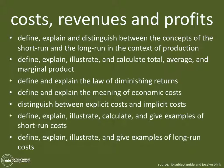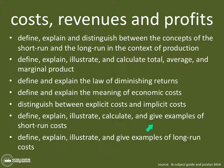Explicit costs are the things that the firm actually pays out of its pocket in its factors of production. Implicit costs are the opportunity costs foregone by the entrepreneur and by using the factory instead of renting it out to someone else. Can you define, explain, illustrate, calculate, and give examples of short-run costs? Do you know what total cost, average cost, fixed cost, variable cost, and average variable cost are? If not, go back and study or watch more videos — they're explained throughout the videos on cost, revenue, and profit.